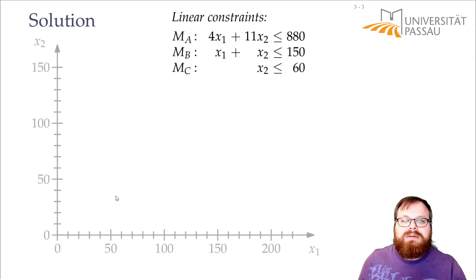And now every point here basically tells us how many of each do we produce. So if I put a point here, then that tells me we produce 0 mice and 0 keyboards. If I put a point, let's say, here, then this tells us we produce 100 mice and about 55 keyboards. And I want to find out which points are valid.